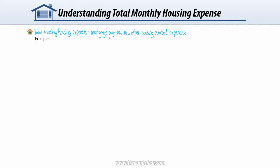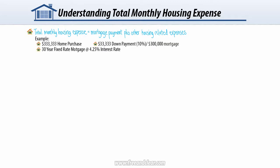In this example, let's review a borrower who is purchasing a $333,333 home. Our borrower makes a down payment of 10% of the purchase price, or $33,333, and obtains a mortgage for the remainder of the purchase price, so $300,000. Let's assume our borrower gets a 30-year fixed-rate mortgage with an interest rate of 4.25%.